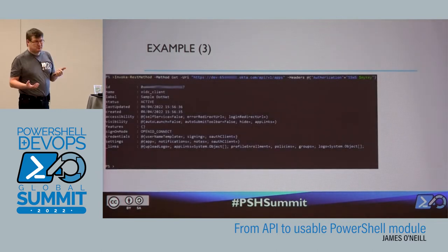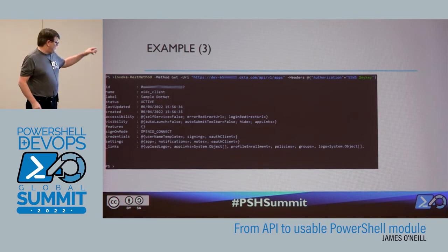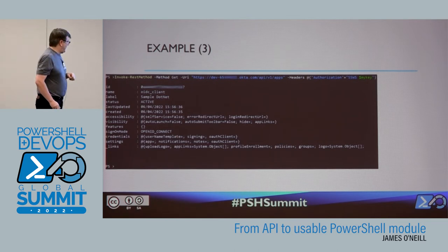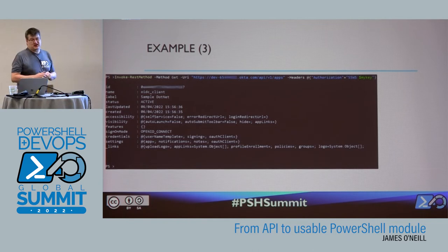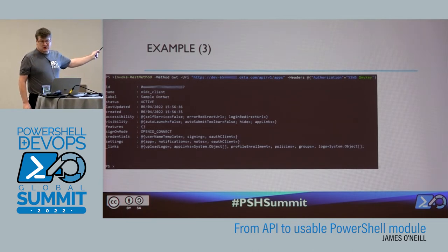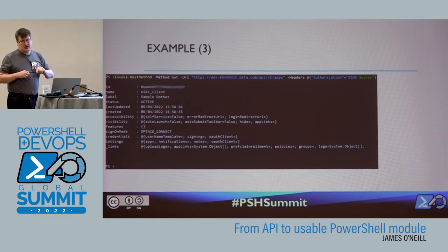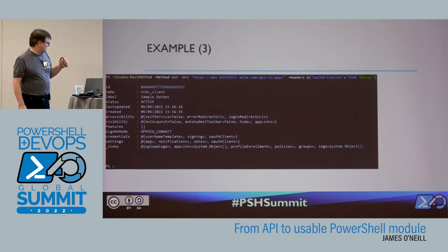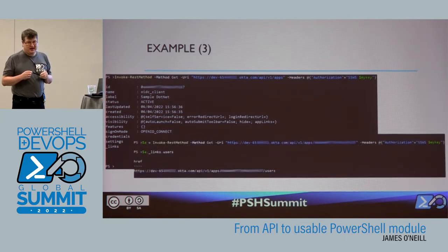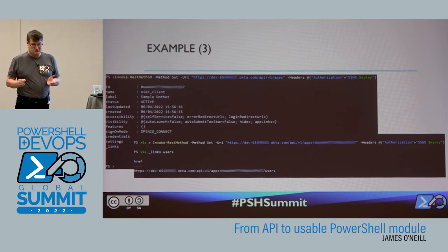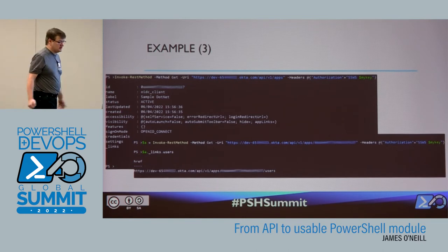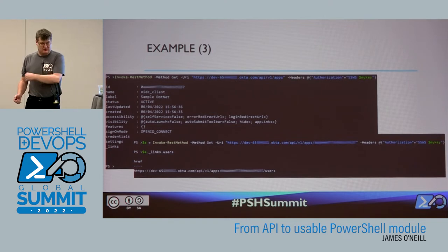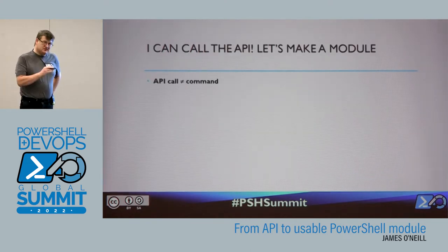And this worked first time — couldn't believe it, absolutely couldn't believe it. Off it went and found my app that I'd created in Okta. At the bottom you can see there's an underscore links section. Quite often what gets returned gives you links to get to other helpful stuff. There's an ID in there so if I try going to apps-slash-ID, again I get some information back. I've actually cracked calling the Okta REST API. And this is where I need to bring some caution in.